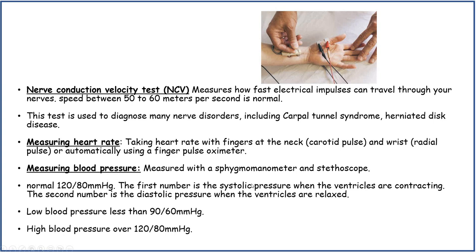Measuring blood pressure is done with a sphygmomanometer and a stethoscope. The normal value should be about 120 over 80 mmHg. The first number is systolic pressure when the ventricles are contracting, and the second number is diastolic pressure when the ventricles are relaxed. Low blood pressure is deemed as less than 90 over 60 mmHg, and high blood pressure is over 120 over 80 mmHg.